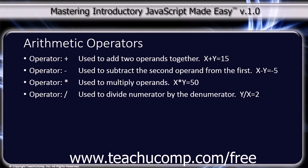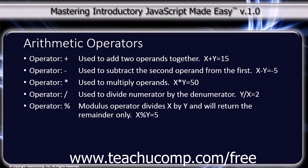The next operator is the forward slash, which is used to divide the numerator by the denominator. y divided by x equals 2. The next operator is the percentage sign, which is the modulus operator, and divides x by y and will return the remainder only. For example, x % y equals 5.